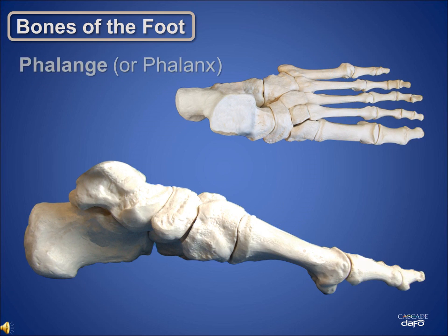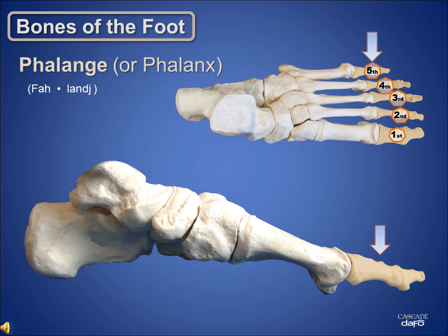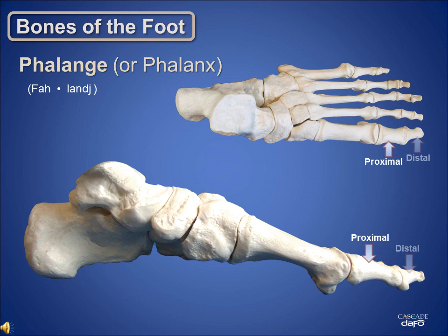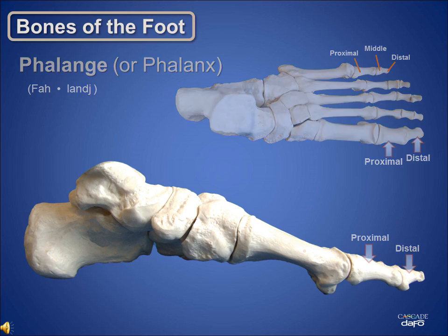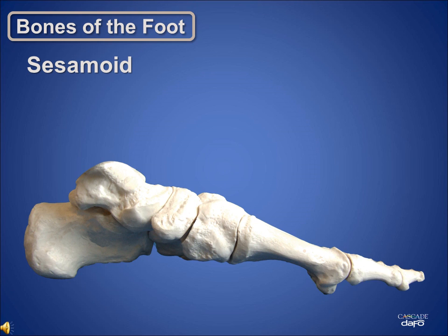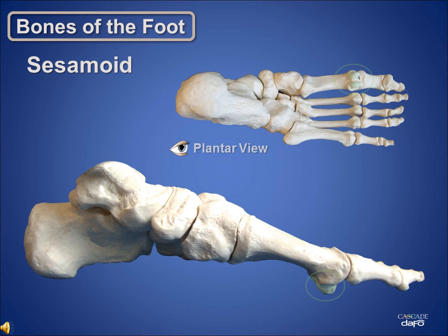The phalange bones, or phalanges, form the toes. They too are numbered 1 through 5. The first phalange has two bones, the proximal phalange and the distal phalange. All the other phalanges have three bones: the proximal, middle, and distal. The final two bones of the foot are two small bones underneath the first metatarsal head, called the sesamoid bones.